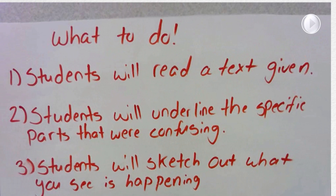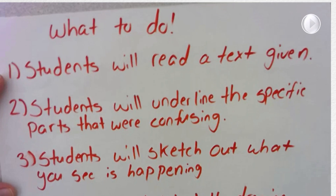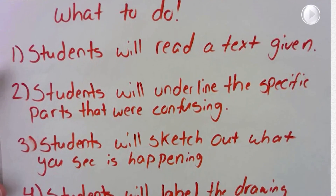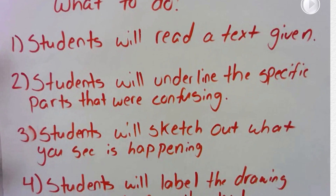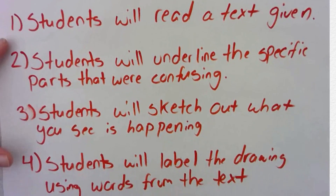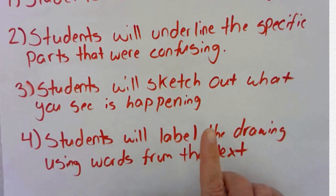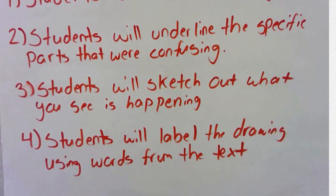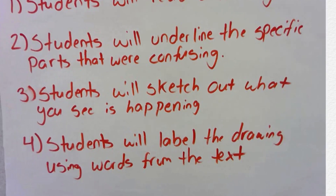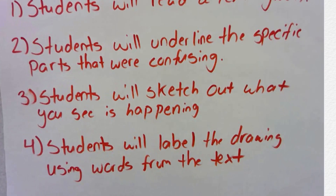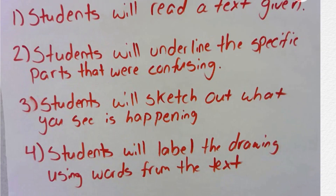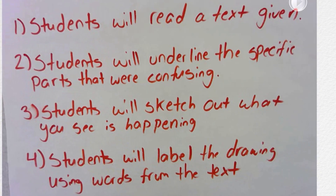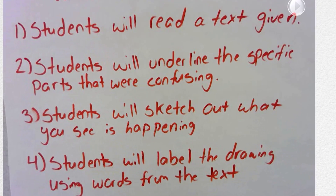This is how teachers would do this — here's what to do. Number one, students are going to read a text that's given to them. They're going to underline the specific parts that were confusing to them. Students will sketch out what they think is happening, and they will label the drawing using words from the actual text.